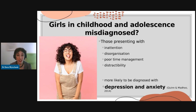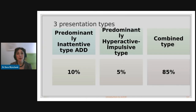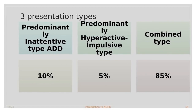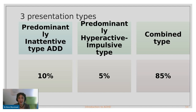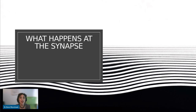There are three predominant presentation types. The most common is the combined type — both inattention and hyperactivity/impulsivity. About ten percent have the mostly inattentive type — more girls than boys — who are dreamier and absent without the hyperactivity. Then there are those who are predominantly hyperactive-impulsive, only five percent, who do not have focusing or concentration issues.